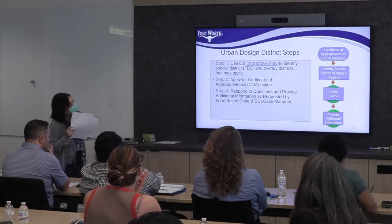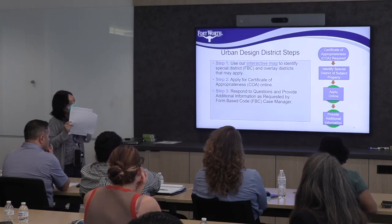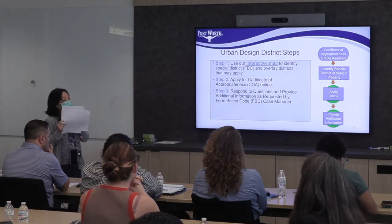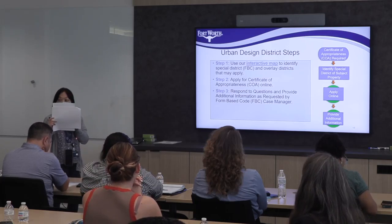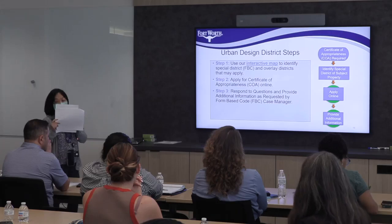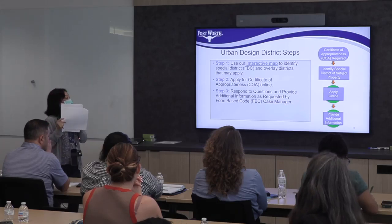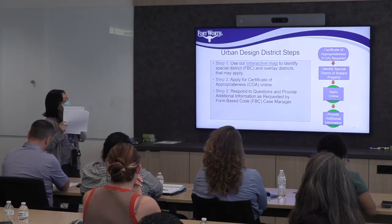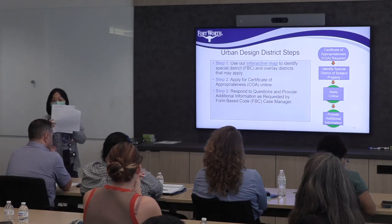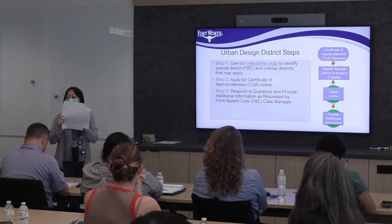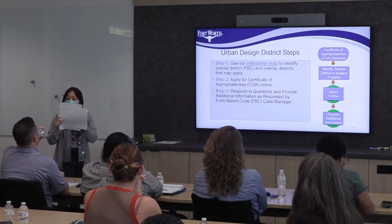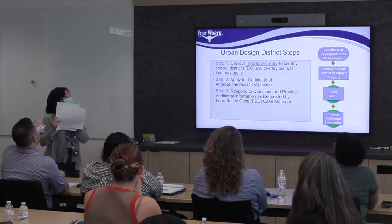These are the urban design district steps. First, you can go check the zoning map to see which district you are in — what kind of overlay district or form-based code you need to apply. Second, when you apply for a COA, you can do it online. And step three, when you apply online, staff may ask you for some additional information, so you can work with our staff to finish the application.